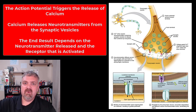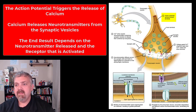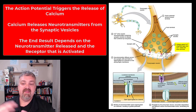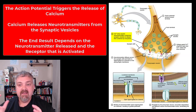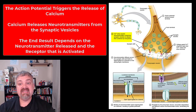Let's look at how synapses work. Step one: the action potential arrives at the axon terminal, at the synaptic knob. Step two: voltage-gated calcium channels open and calcium enters the axon terminal. Step three: this calcium entry causes the synaptic vesicles to release their neurotransmitters. So calcium is what causes neurotransmitters to be released from a neuron into the synapse.